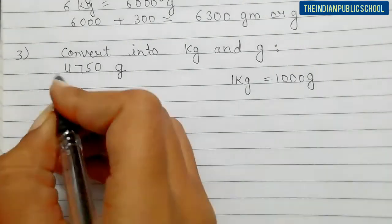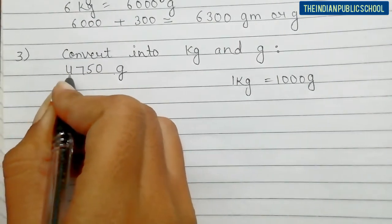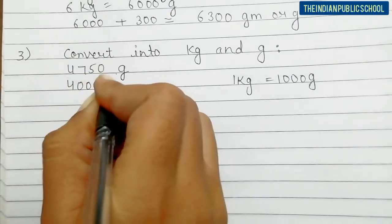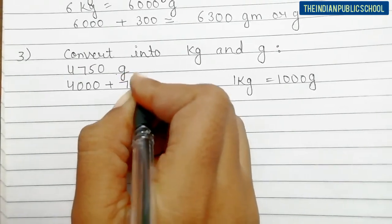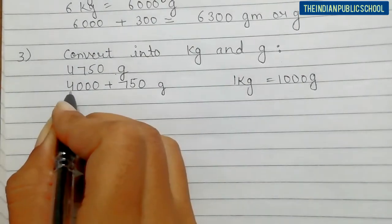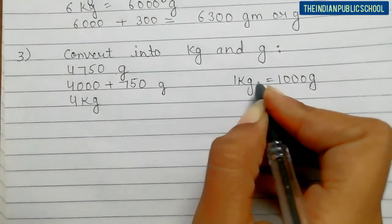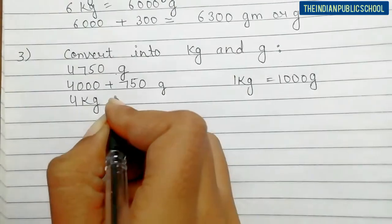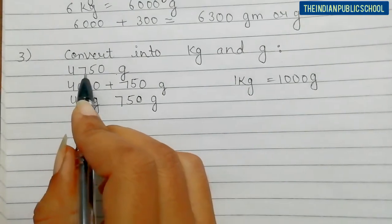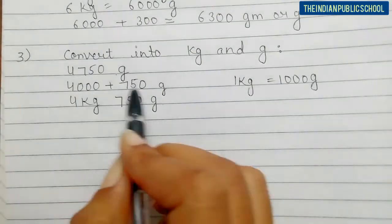We will solve this now. The given value is 4750 grams. We separate this into two parts: 4000 plus 750 grams. We have 4000 grams and 750 grams separately. We can write 4000 grams as 4 kg, and the additional 750 grams stays as is. So 4750 grams equals 4 kg 750 grams. This is how you solve this type of question.